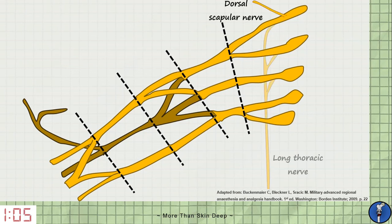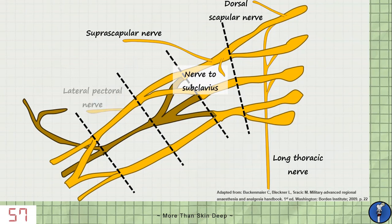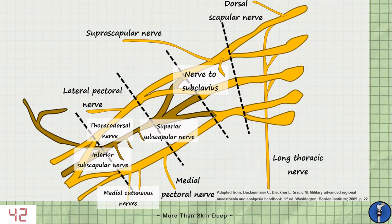From the roots we have the dorsal scapular and long thoracic nerve. From the superior trunk we have the suprascapular nerve and nerve to the subclavius. From the lateral cord we have the lateral pectoral nerve. From the posterior cord we have the superior and inferior subscapular nerves and the thoracodorsal nerve. And finally from the medial cord we have the medial pectoral nerve and the medial cutaneous nerves of the arm and forearm.